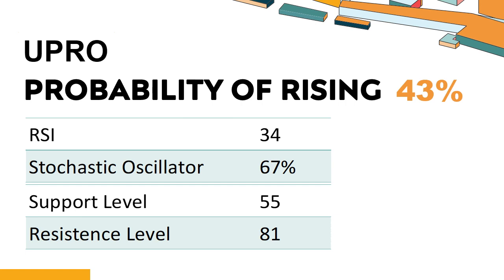The current stochastic oscillator of UPRO is 67%. When the stochastic oscillator stays between 50 and 80, it may indicate that the stock is experiencing a mild downtrend with some selling pressure. In this case, an oversold signal could indicate that a stock is reaching a potential buying opportunity.